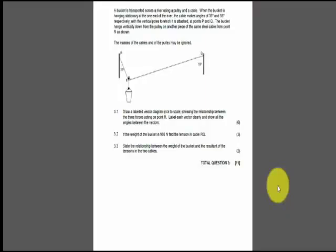Question 3. A bucket is transported across the river using a pulley and a cable. When the bucket is hanging stationary at one end of the river, the cable makes an angle of 35 degrees and 55 degrees respectively with the vertical poles which it is attached at points P and Q. The bucket hangs vertically down from the pulley on another piece of the same steel cable from point R. The mass of the cables in the pulley may be ignored.